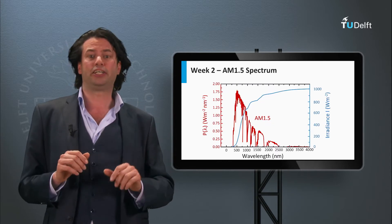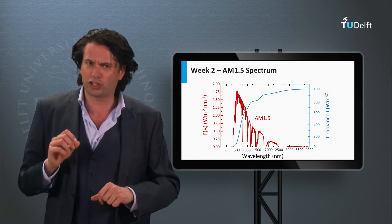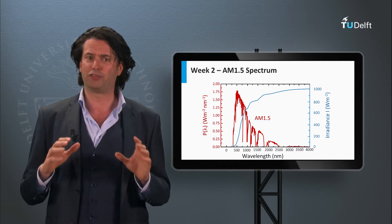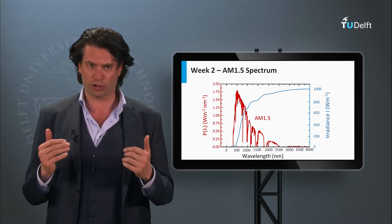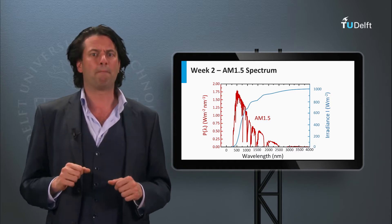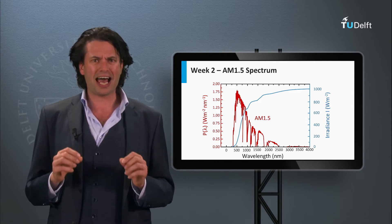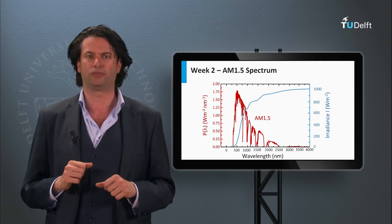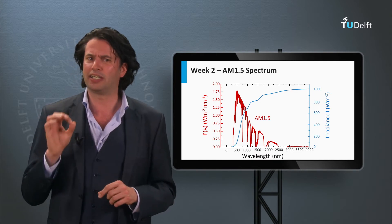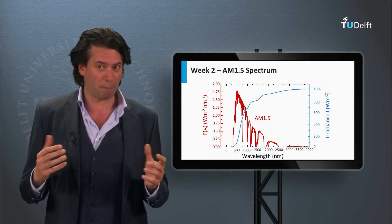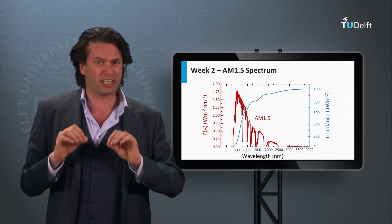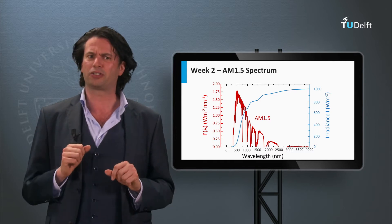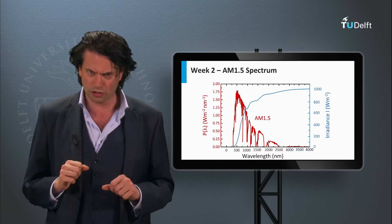We started the theoretical part of this course by discussing the spectral shape and irradiance of sunlight. The spectrum of the sunlight incident on the Earth's surface is determined by the temperature of the Sun and the absorption, scattering and reflection losses in the Earth's atmosphere. You now understand that this spectral shape basically determines the potentially achievable conversion efficiencies of the various semiconductor materials when used in a single junction device.